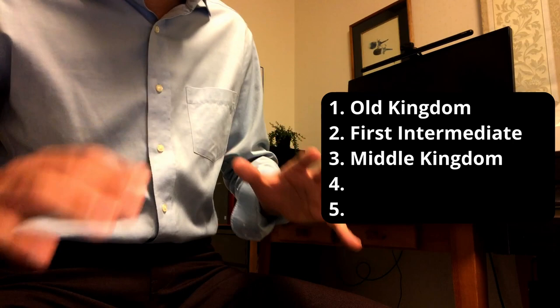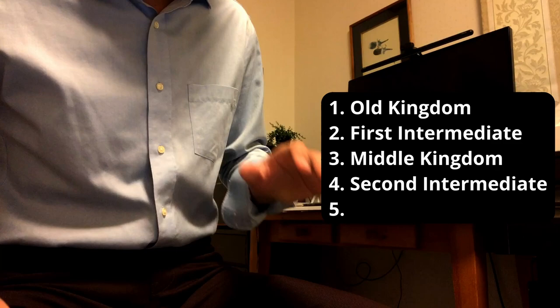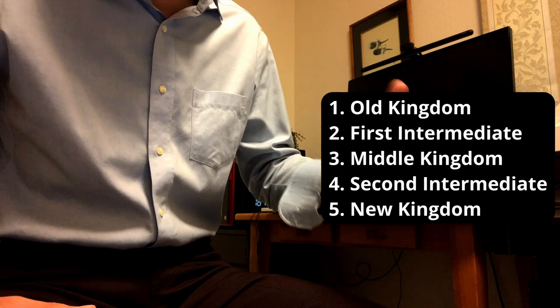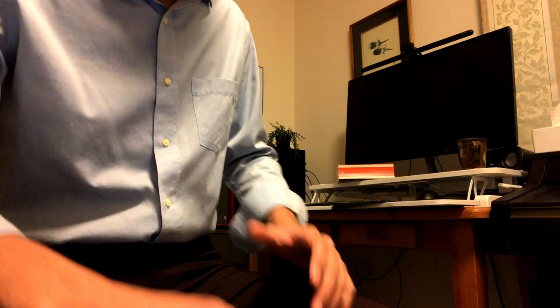The fourth period is called the Second Intermediate. You can probably guess that they got invaded again, and this lasts for 100 years also. The fifth period is called the New Kingdom, which lasted for about 500 years. And during this time again, the Egyptians drove out the invaders and ended up conquering parts of Syria and Palestine. As you can tell, the eras are a sequence of Egypt invading and being invaded.